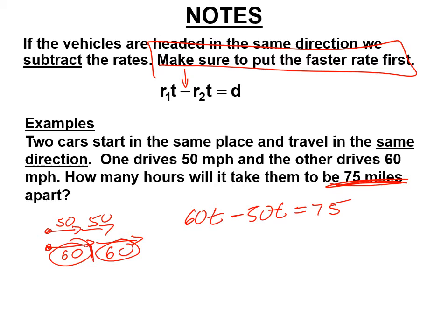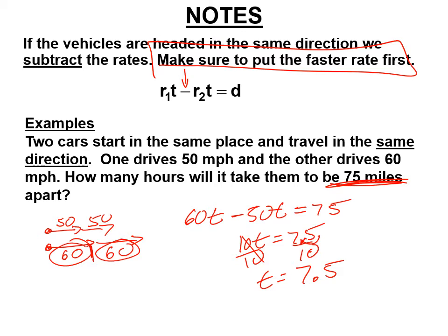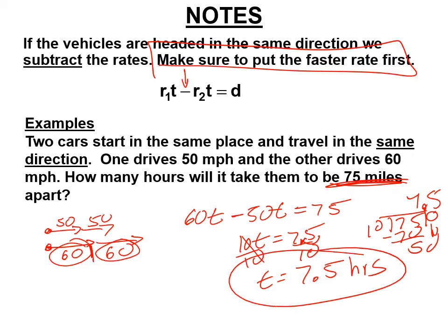We want to know when they're going to be 75 miles apart. 60t minus 50t is 10t, equals 75. Divide by 10, and 75 divided by 10 is 7.5. If you're multiplying by 10, you move the decimal point. If you divide by 10, you move the decimal point the other way. It's 7.5 hours, also known as 7 hours and 30 minutes.